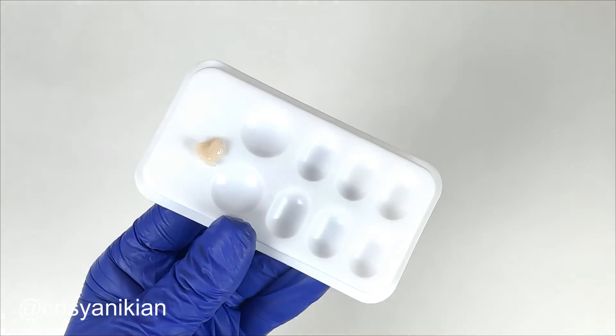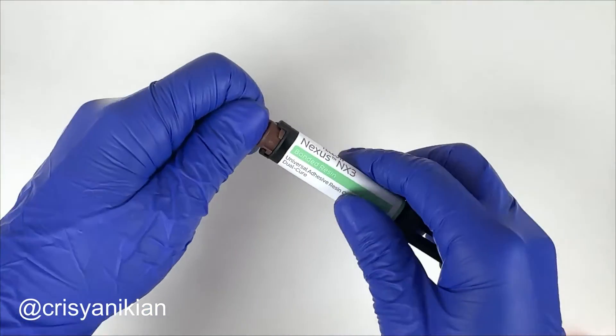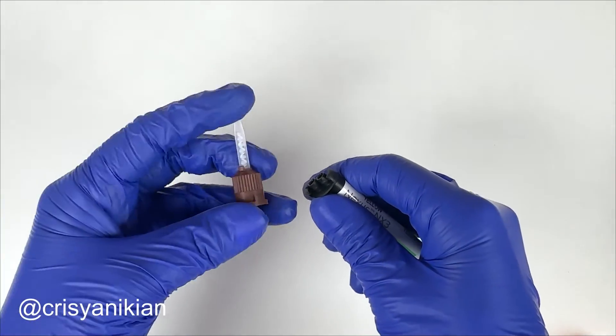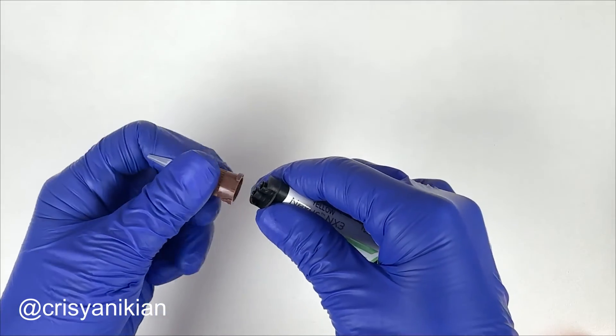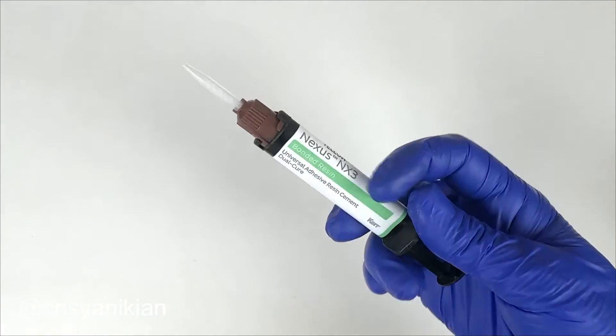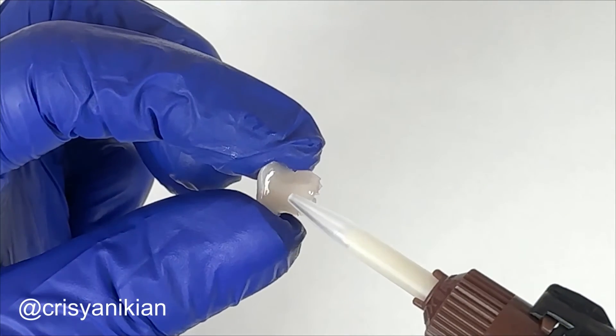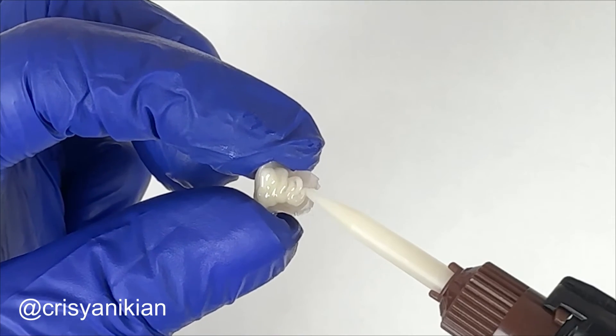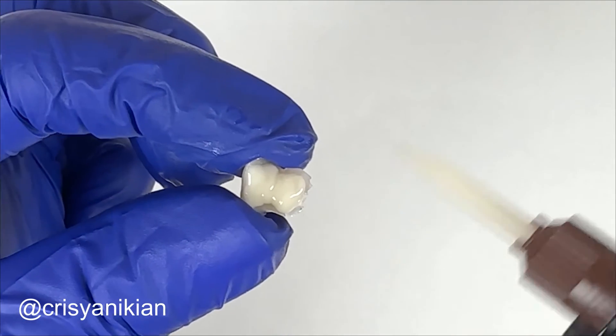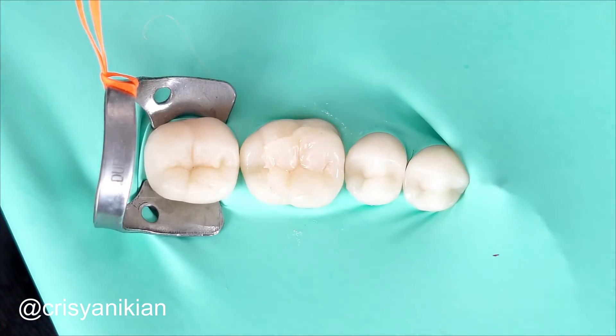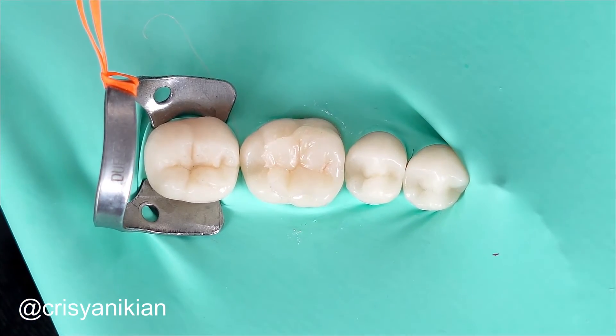Select the appropriate mixing tip for the cement and attach it to the blisters tip. Press the blisters plunger until the cement passes through the entire automix tip. Dispense the resin cement directly onto the internal surface of the onlay. Fill it completely. Insert the onlay into the prepared tooth. Press it well, allowing resin cement overflow.